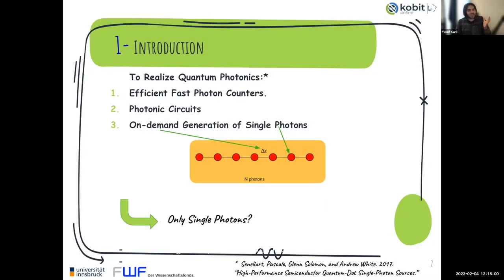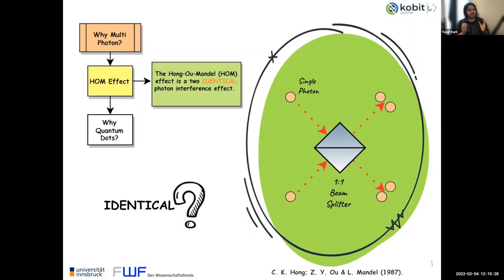To realize quantum photonics, we need efficient fast photon counters to count the photons, photonic circuits to manipulate them, and sources of deterministic single photons. But only single photons can be used in some quantum technologies like quantum key distribution. However, we need multi-photon states for multi-photon experiments like quantum computation. Why? In 1987, three physicists demonstrated two-photon interference effect in quantum optics, known by their surnames as the Hong-Ou-Mandel effect.